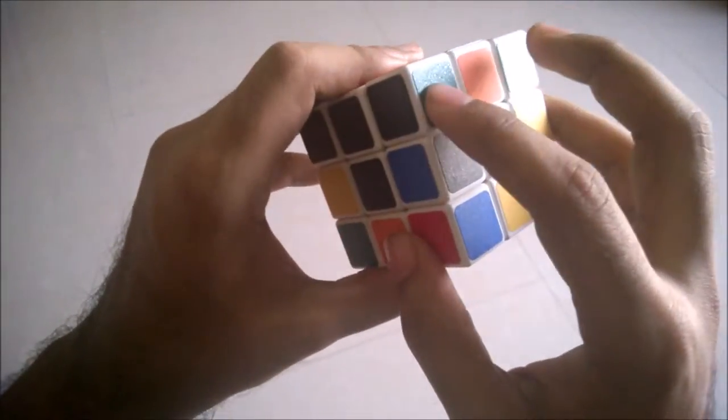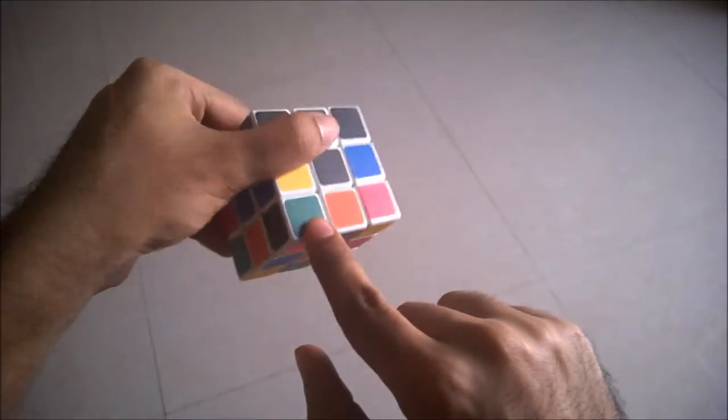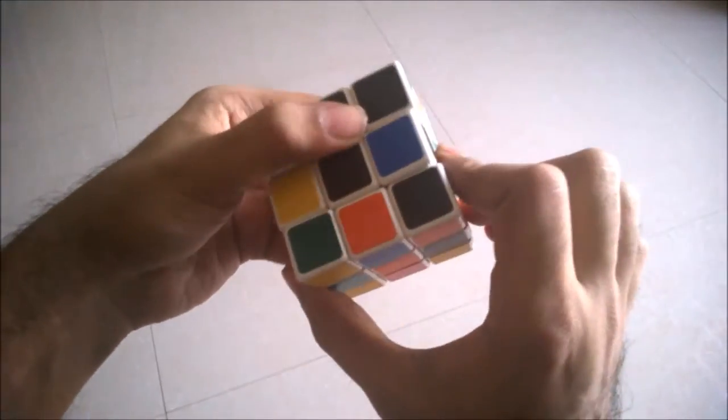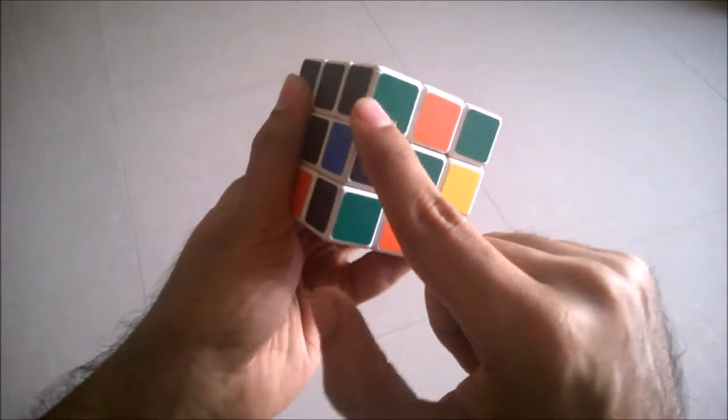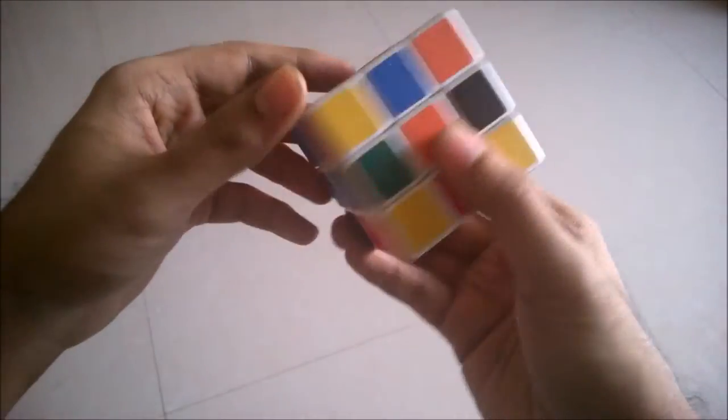So now we want to solve either the green part or the blue part. Let's go for the green part. Green is here. If you want to bring green over here, just turn it that side. So simple. Black, green. We want black, green to come here. So where is another black, green? It's just right here.